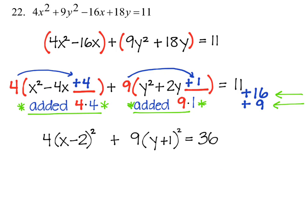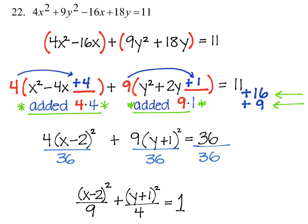But this needs to be a 1, so we're going to divide everything by 36. And now we have the ellipse written in its standard form where we can find the center by using 2 and negative 1. That's our center.